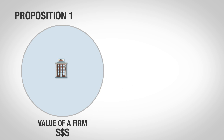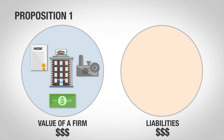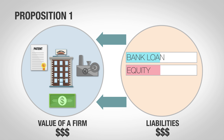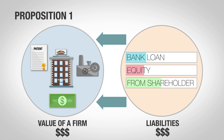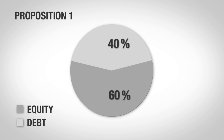Proposition 1 relates to the value of the firm. It states that the value of a firm is derived solely from the value of its assets and is independent of the composition of liabilities used to finance those assets. For example, using the pie model — no matter how you divide the pie, it's still the same size.